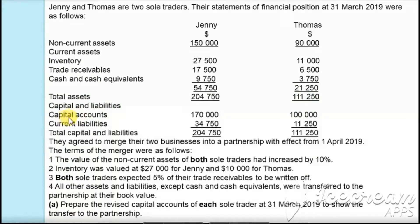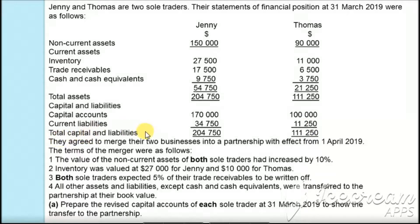Capital and liabilities: capital accounts for Jenny is $170,000 and for Thomas is $100,000. Current liabilities for Jenny is $34,750 and for Thomas is $11,250. Total capital and liabilities for Jenny is $204,750 and for Thomas is $11,250.